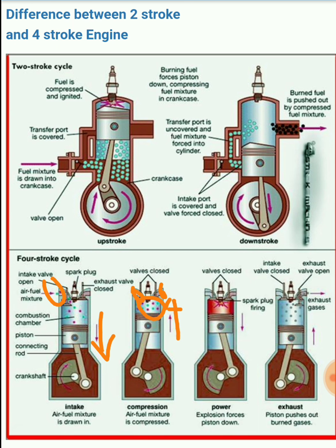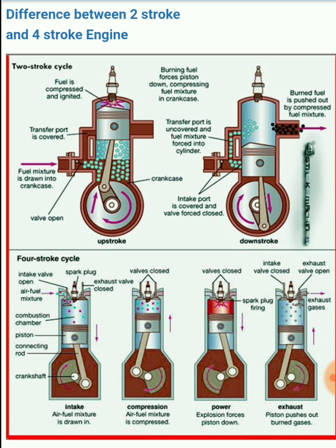At the end of compression, combustion takes place — the spark fires and combustion starts. That gives us the power stroke, where the piston comes down. Then in the second rotation, at the end, the exhaust stroke occurs — the piston goes up, the exhaust valve opens, and exhaust gases are expelled.